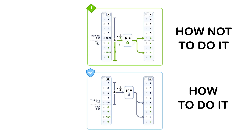A common example: pre-processing your entire dataset before splitting. If you normalize using statistics from the full dataset, you're letting test data influence your training. Your model gets a peek at what it's not supposed to see.